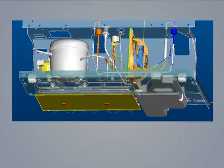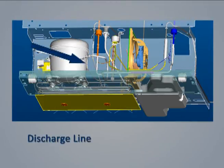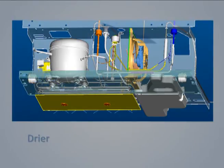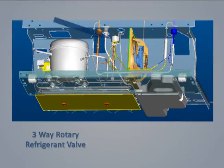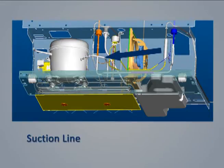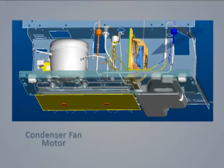Looking at a cutaway of the machine compartment, we see the actual location of the components just identified: compressor, discharge line, condenser, heat loop, dryer, three-way rotary refrigerant valve, check valve, suction line, process tube, and condenser fan motor.